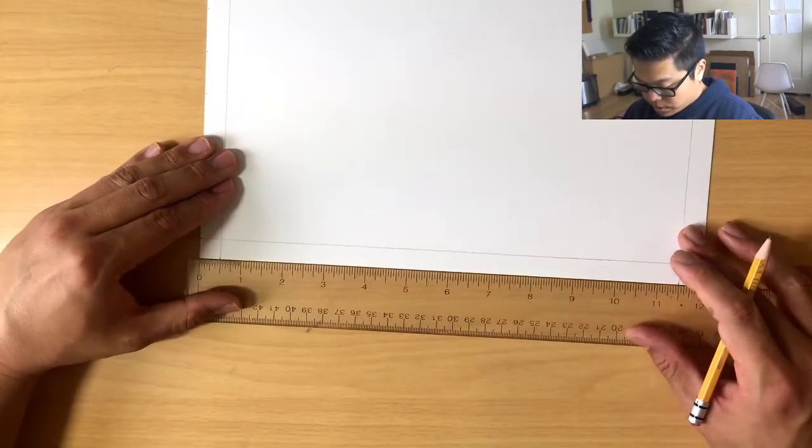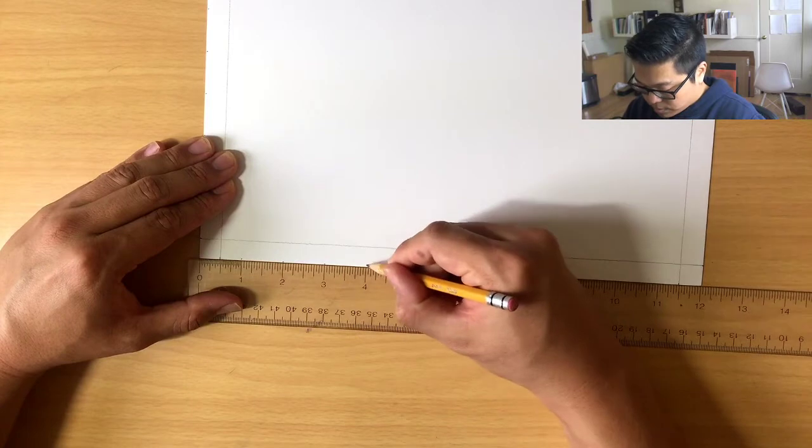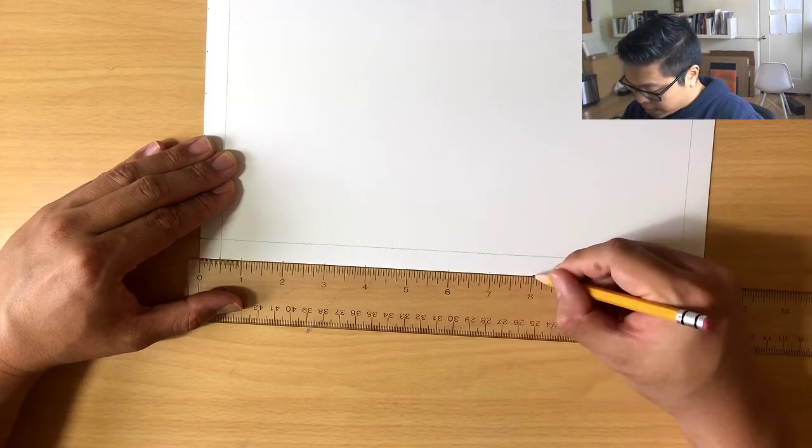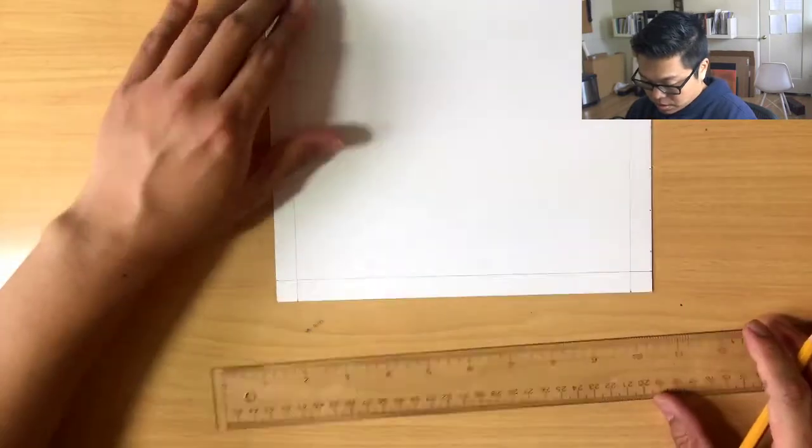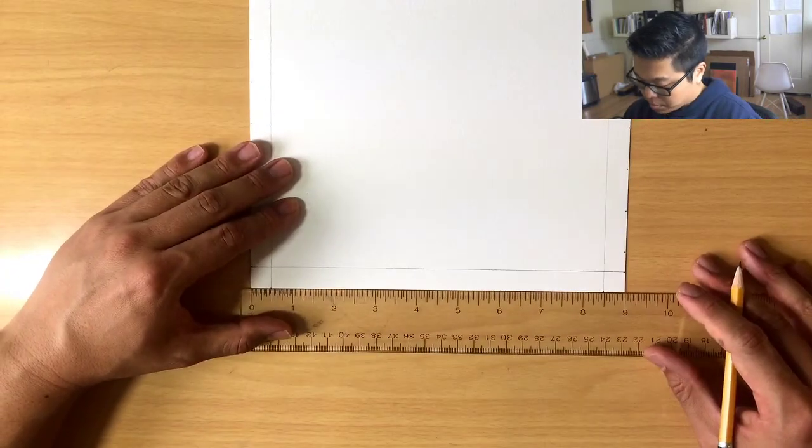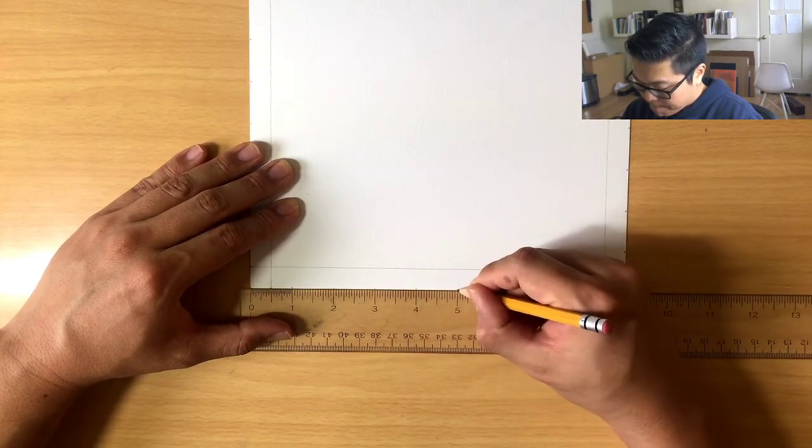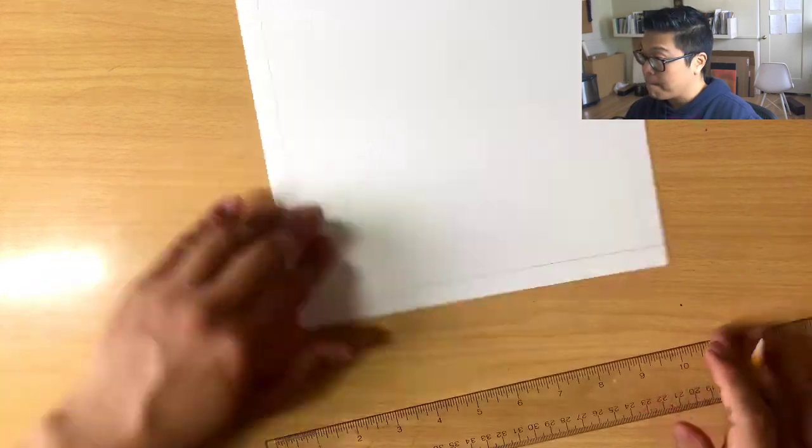The dots you put down, they're very tiny. They're not like Scantron dots. They're just single, tiny tick marks. Once you're finished with making those dots, each of your edges should have a tiny dot at every 1-inch increment.